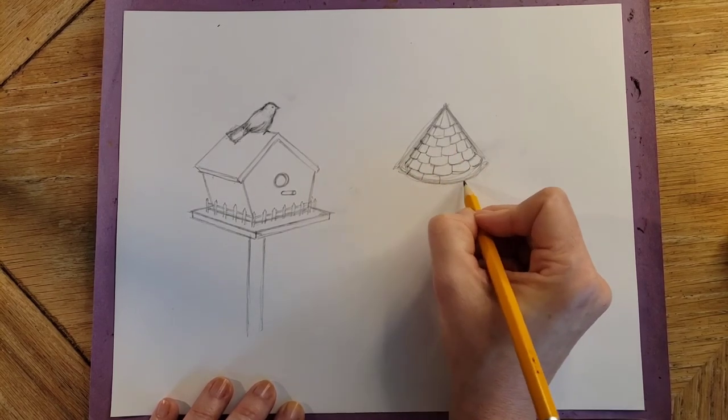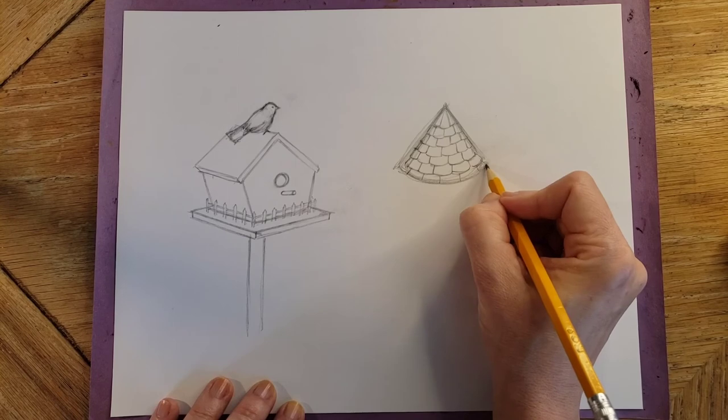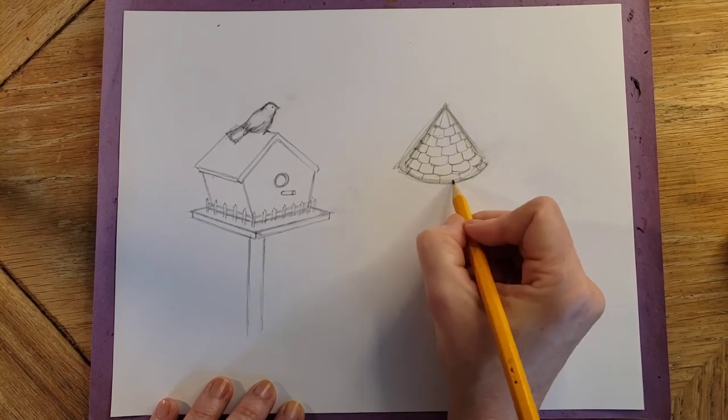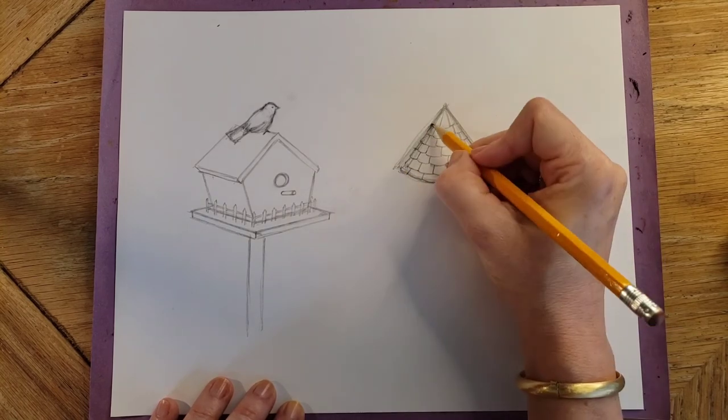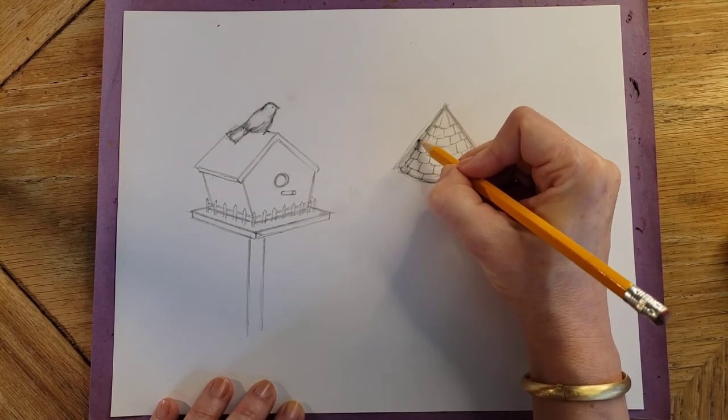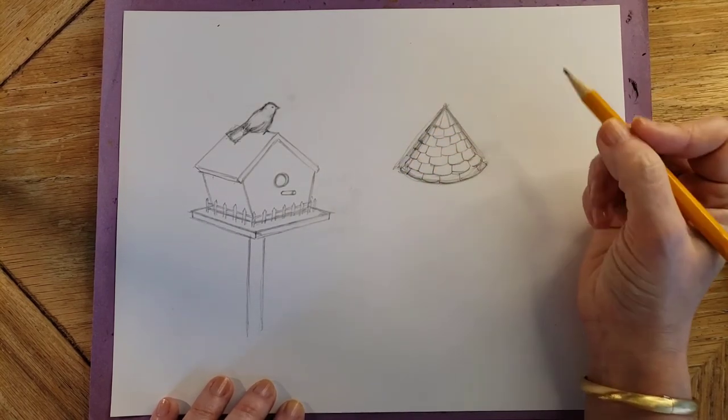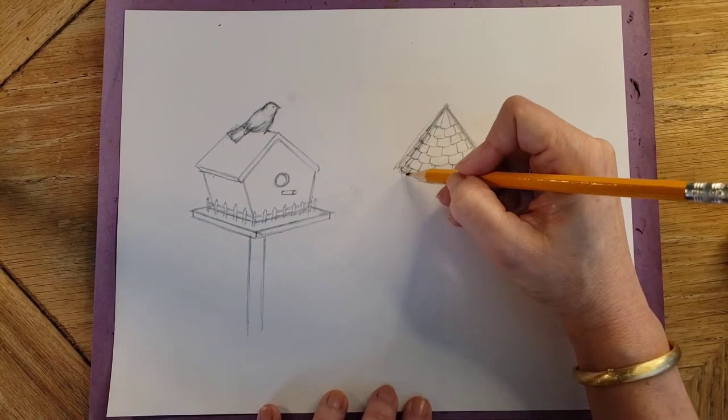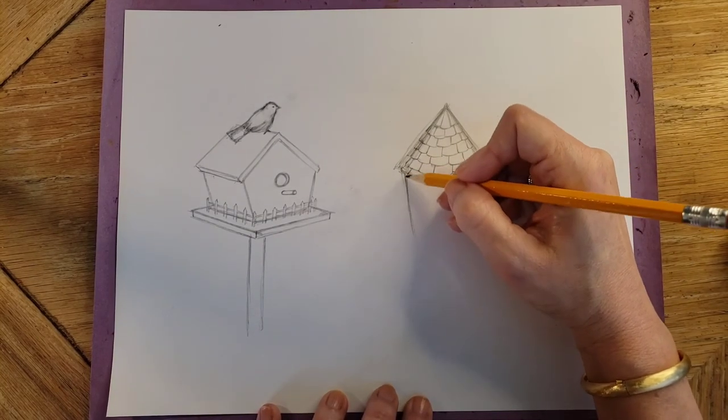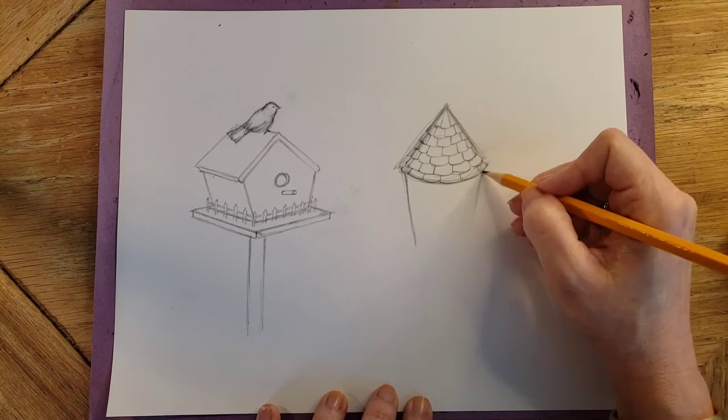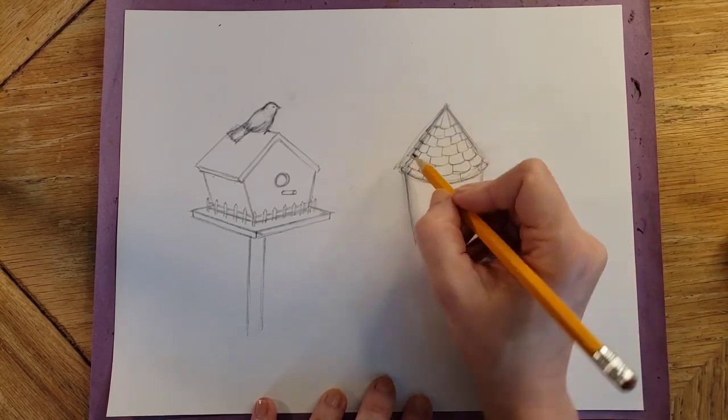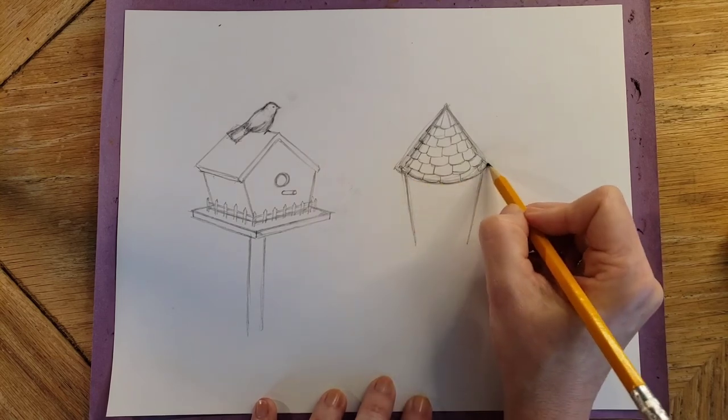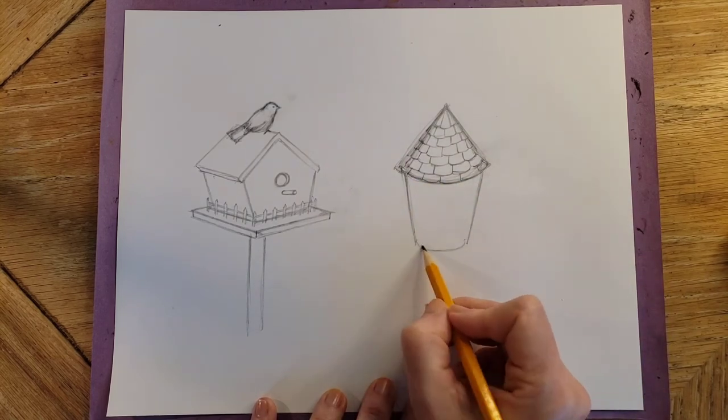And then down to this one, which would be the last one. And I'm probably going to make that come out a little further when I do the Sharpie. And then for this part, I'm going to have this angle in a little bit. So this would come in for the birdhouse part. Round it again at the bottom.